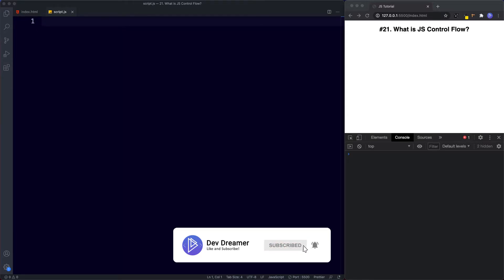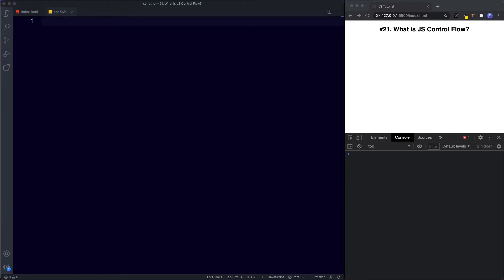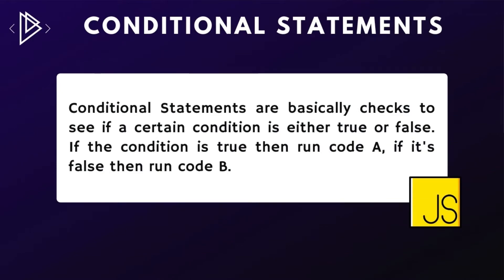In doing so, we're giving our program the ability to respond to changing conditions and intelligently automate repetitive tasks. Over the next few lessons we're going to be focusing on control flow by looking at JavaScript's conditional statements and loops. Conditional statements are basically checks to see if a certain condition is either true or false. Like in the flowchart example — the question 'are you hungry?' had two possible answers, and if the condition is true we run code A; if it's false we run code B.